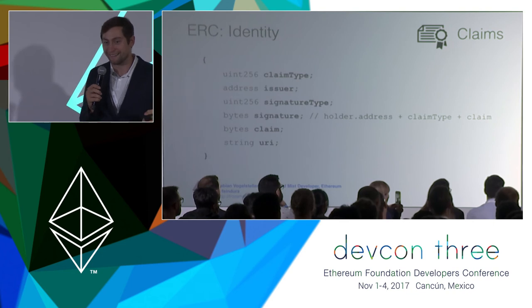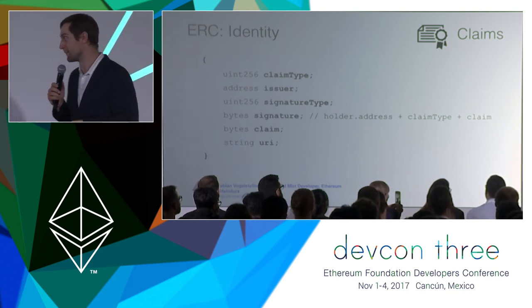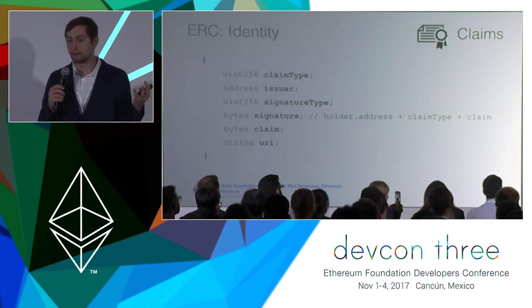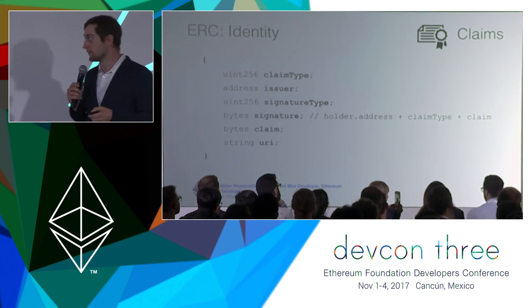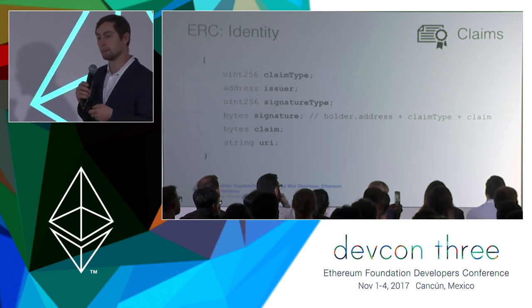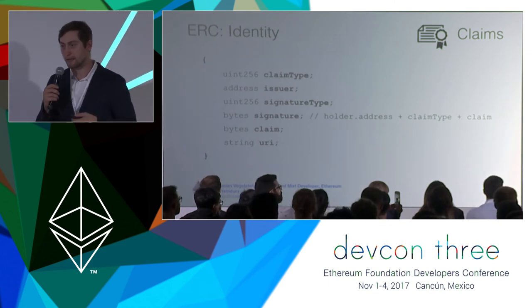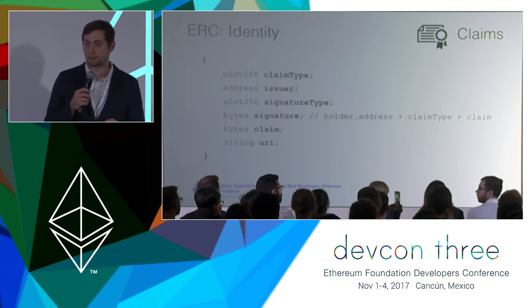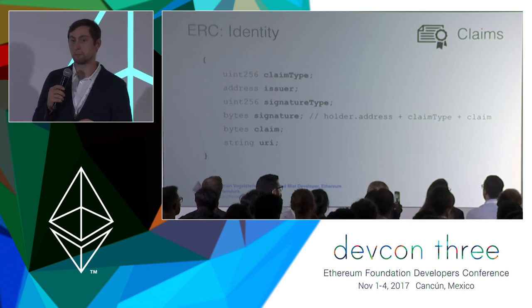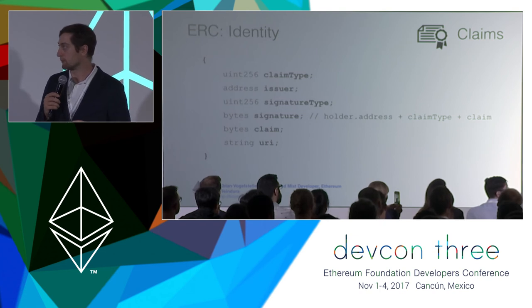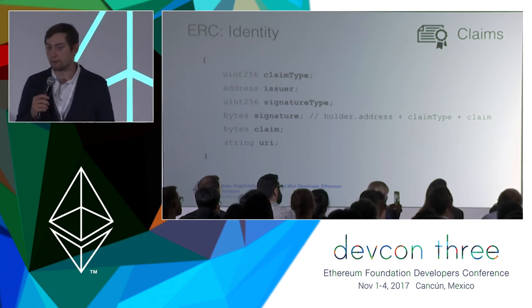As long as any external party trusts that issuer, they can be completely confident that you have an address and that you're a human — or maybe some kind of flag in the data. That might be fully enough to allow you access to something, to issue credit or an account, or whatever you want in an automated process. So it's all about trusting the claim issuers. On the beginning this will probably be big institutions, but in the future it could also be peer-to-peer networks or other kinds of reputation systems. The claim structure is completely open.